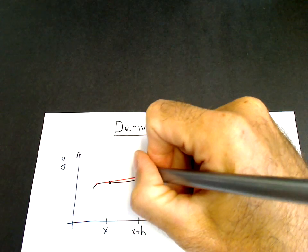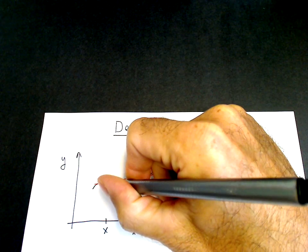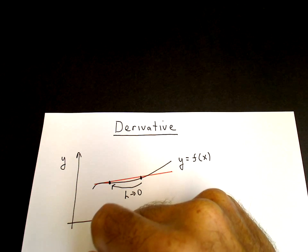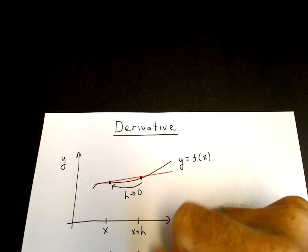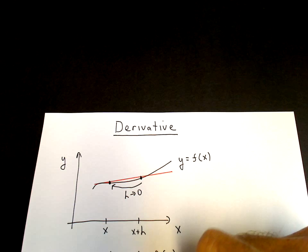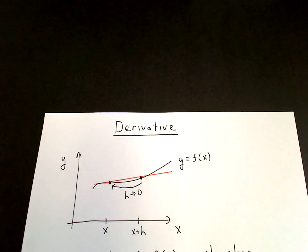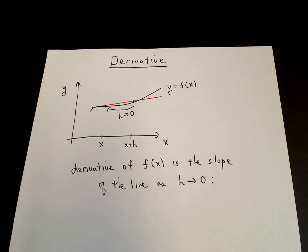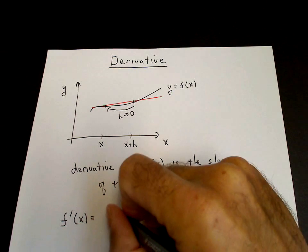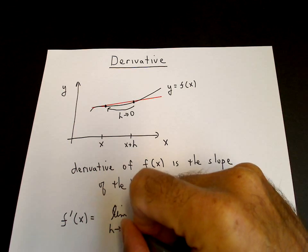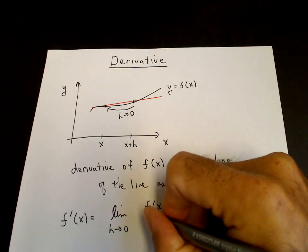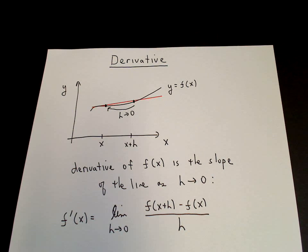As this point goes to that point, h goes to zero. The derivative of f of x is the slope of the line as h goes to zero. So the definition is: the slope delta y over delta x is the limit as h goes to zero of f of x plus h minus f of x, divided by h. That's the definition of the derivative.